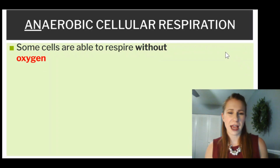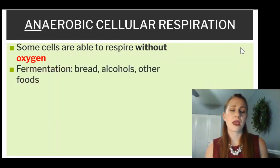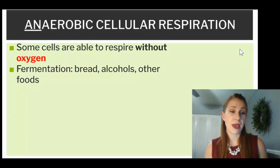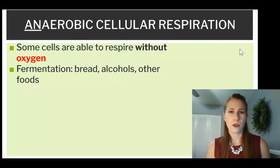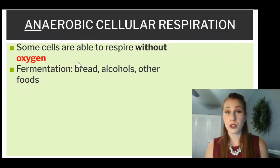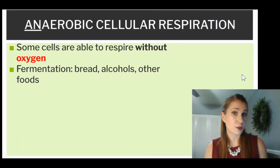A lot of times this is kind of a crisis mode for your cells. It's called fermentation, and it helps us make a lot of things in life like bread, alcohol, and other foods like sauerkraut or that fancy tea called kombucha. A lot of this is formed using fermentation, which is essentially anaerobic cellular respiration.